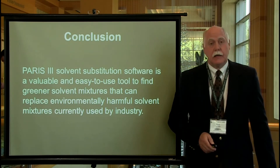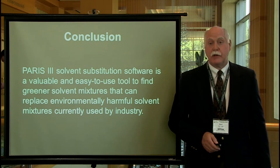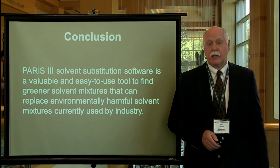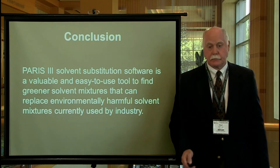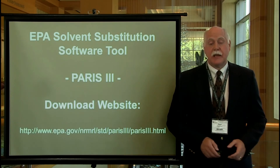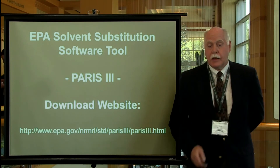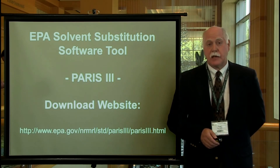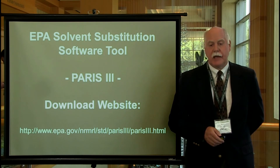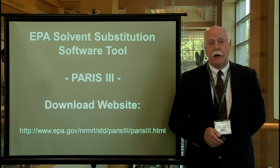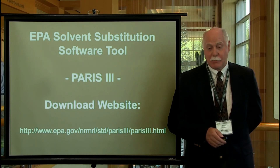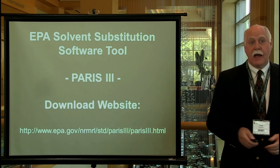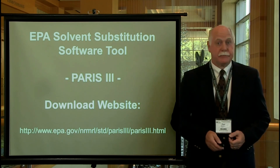In conclusion, the Paris 3 solvent substitution software is a valuable and easy-to-use tool. It is used to find greener solvent mixtures that can replace environmentally harmful solvent mixtures currently used by industry. Paris is an EPA solvent substitution software tool. Please visit the download website at http://www.epa.gov/nrmrl/std/Paris3/Paris3.html and download the free software Paris 3. Thank you.